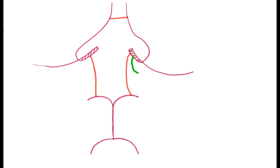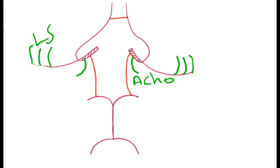From the internal carotid artery arises the anterior choroidal artery. From the middle cerebral artery arise the lenticulostriate arteries.